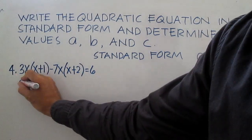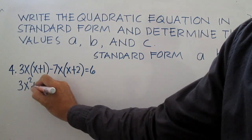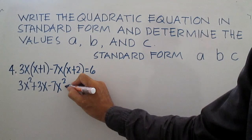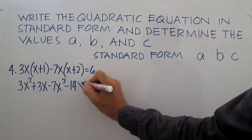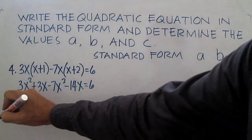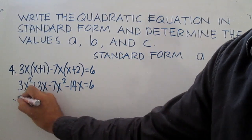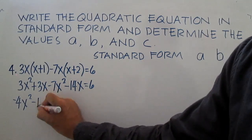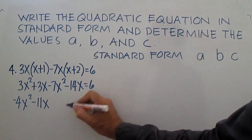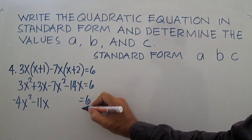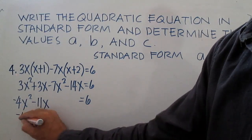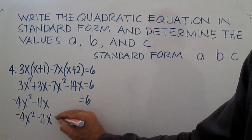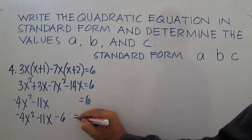Number 4: 3x times x is 3x squared, plus 3x times 1 is 3x, minus 7x squared minus 14x equals 6. Combining similar terms: 3x squared minus 7x squared is negative 4x squared, and 3x minus 14x is negative 11x equals 6. Transfer 6 to the left side — positive becomes negative — giving negative 4x squared minus 11x minus 6 equals 0.